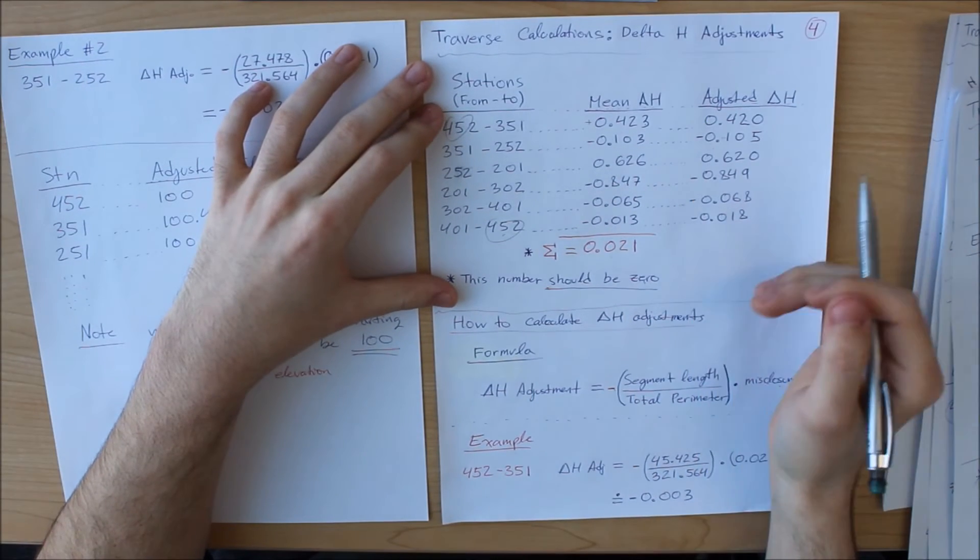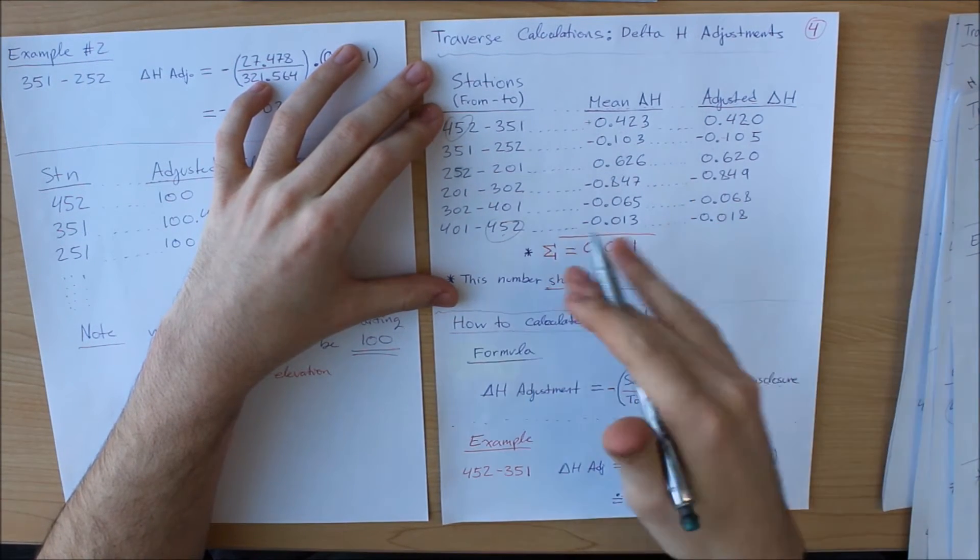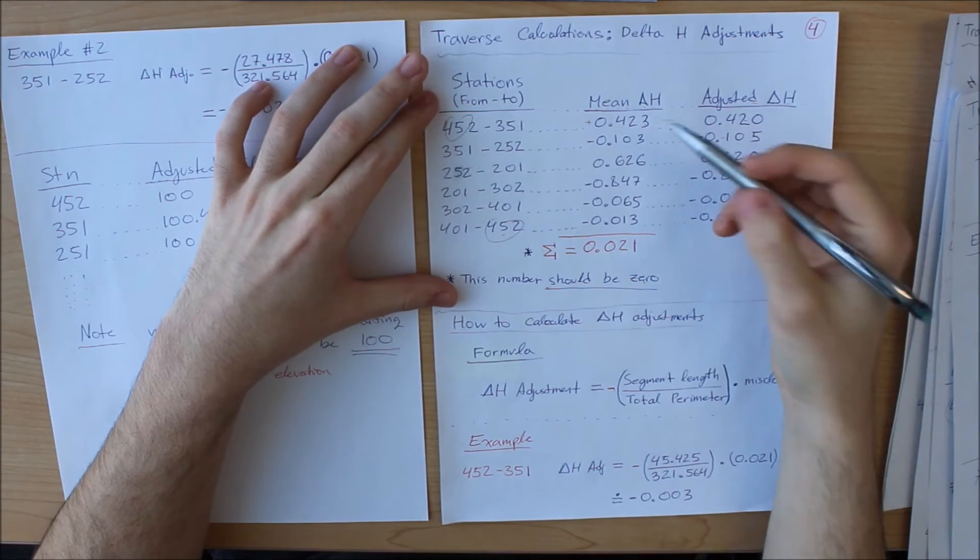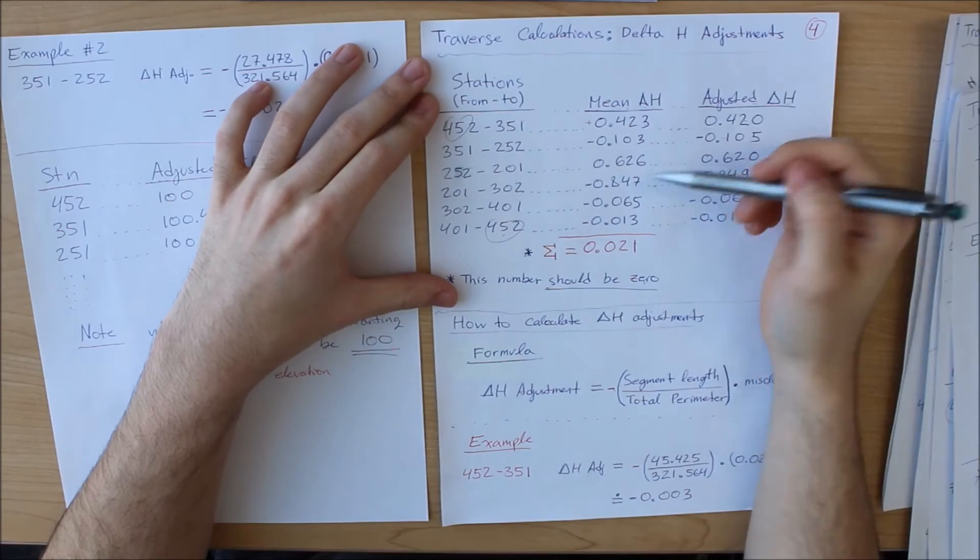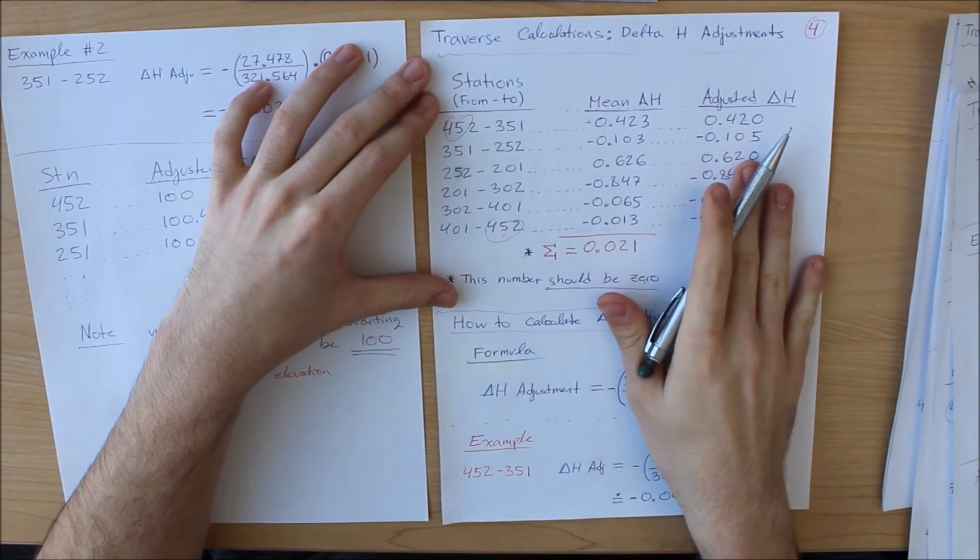I'm going to show you how to perform the delta h adjustments, or in other words, the elevation adjustments. In my case, this is the observed delta h values that I have, and I'm just going to run you through what you are seeing right here.